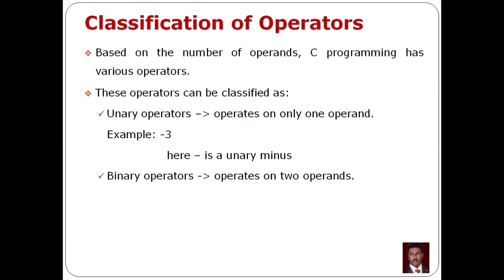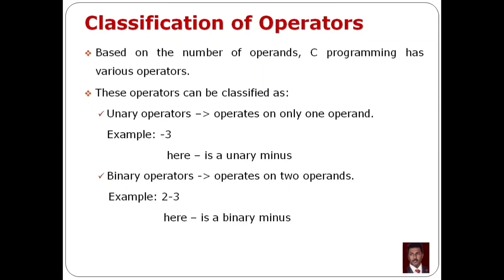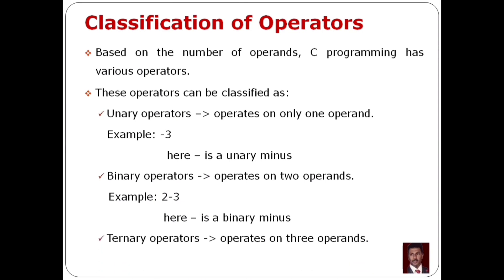The next one is the binary operator. It operates on two operands. Example: two minus three. The minus here is the operator performing subtraction — this minus is a binary minus, and it has two operands.